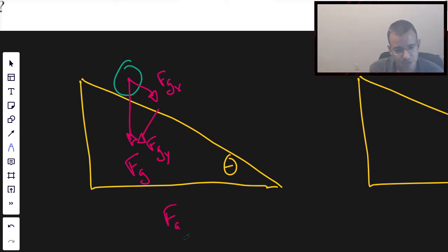Now we can use geometry to figure out what these components are with a relationship to theta, but what I have memorized is FGX is going to be mg sin(theta).